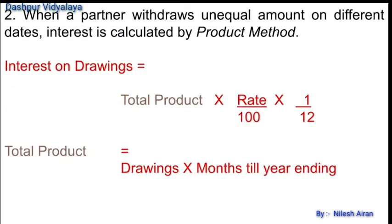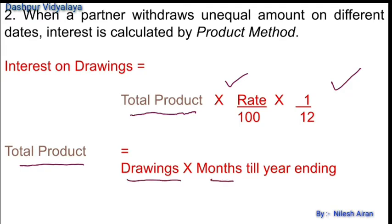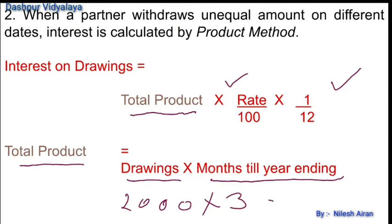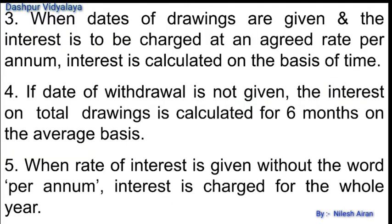When a partner withdraws unequal amounts on different dates, interest is calculated by the product method. Under the product method, the product is calculated first, then the total of products is multiplied by rate divided by 100 and 1/12. The product is calculated as drawings multiplied by the months remaining till year ending. For example, if rupees 2000 is withdrawn on 1st January, 3 months remain, so the product is 6000.